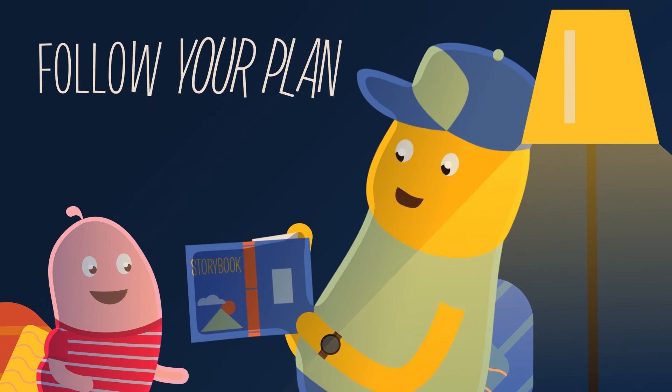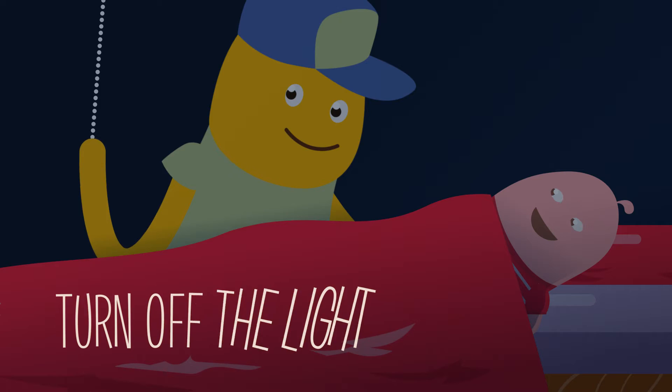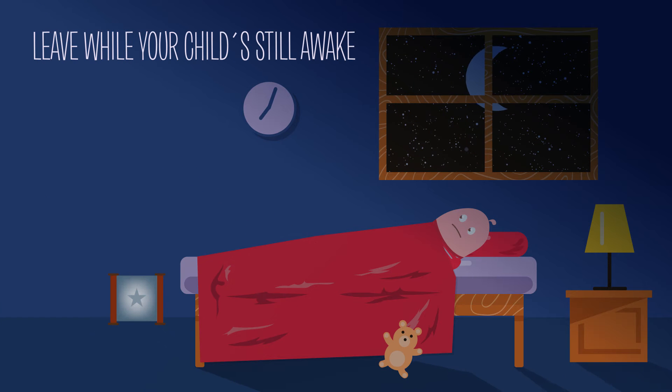Follow your plan. After you've had your time together, tuck your child in and turn off the light. Leave the room while your child's still awake to help him get used to going to sleep on his own.